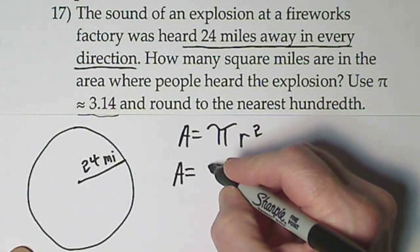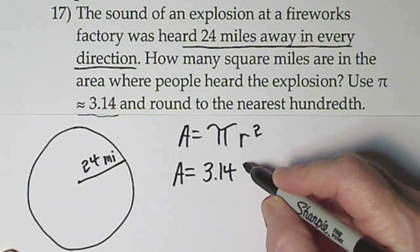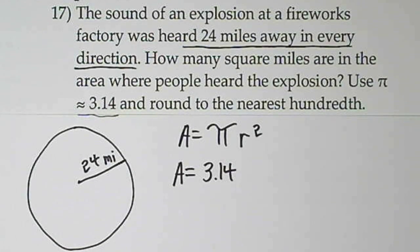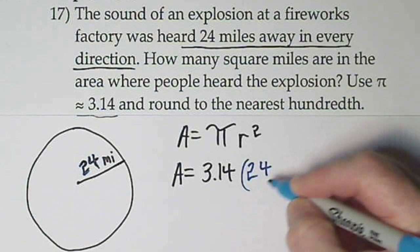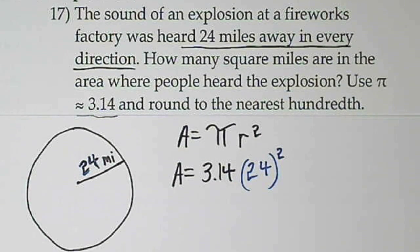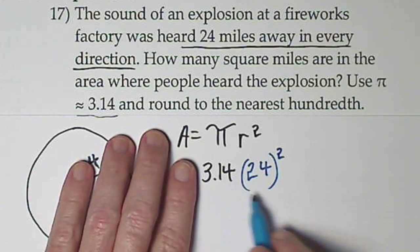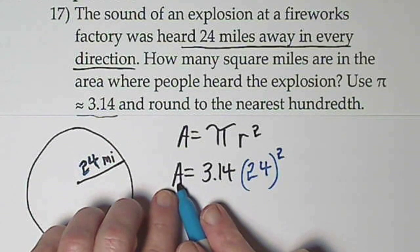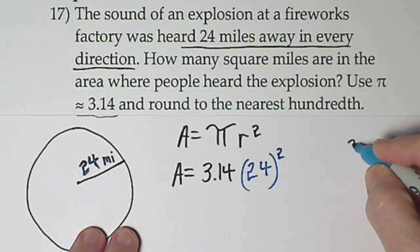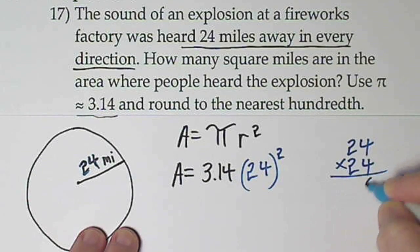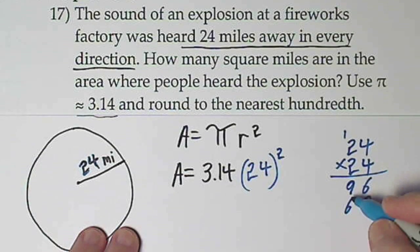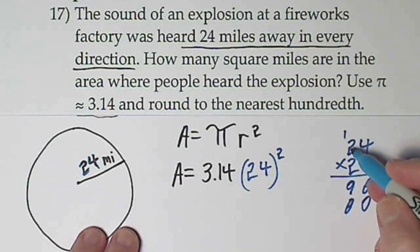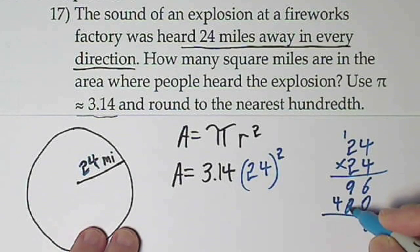They're telling us to use 3.14 as an approximation for π. The radius we have, so we just have to plug in our values. So again, π we're using 3.14, and then the radius, whatever it is, we're going to have to square it. So 24 miles is the radius and we'll need to square that. We'll need to take care of our exponents first. So I get 576. 24 squared is 576.